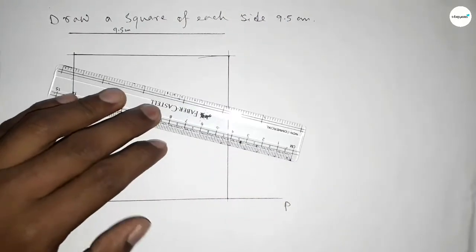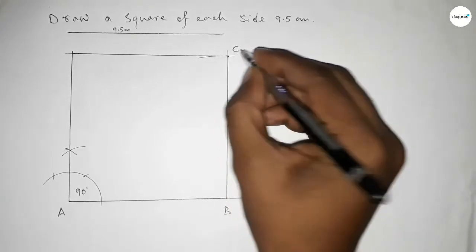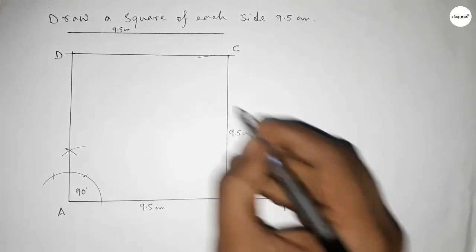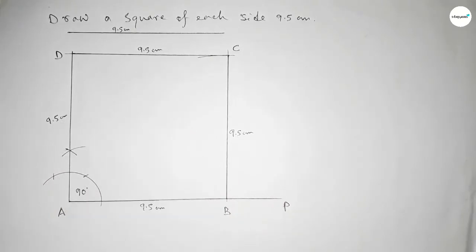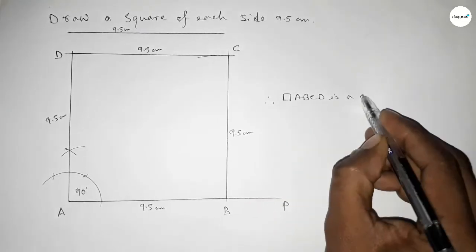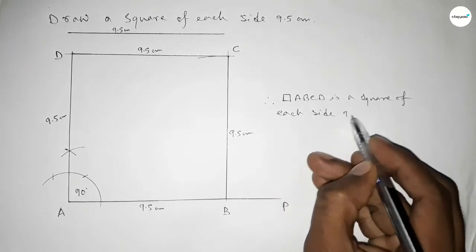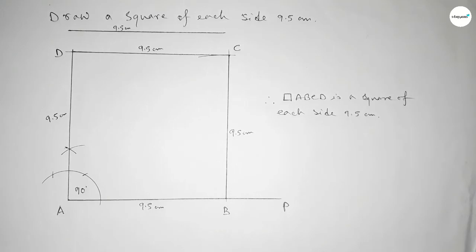Joining this side — taking point B here, point C here, and point D here. This side is 9.5 cm, this side is 9.5 cm, this side is 9.5 cm, and this side also 9.5 cm. Therefore, rectangle ABCD is a square of each side length 9.5 centimeters. That's all, thanks for watching.